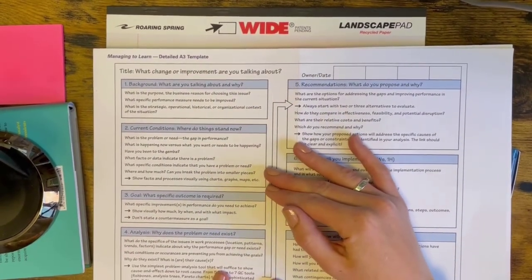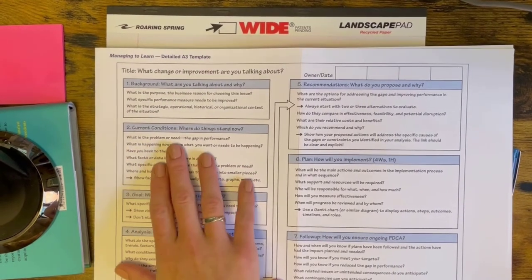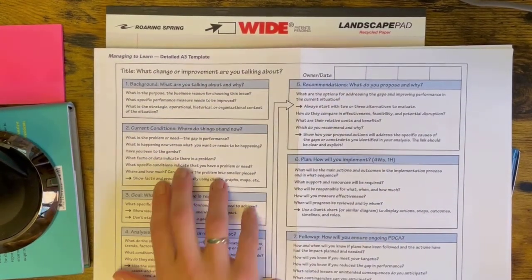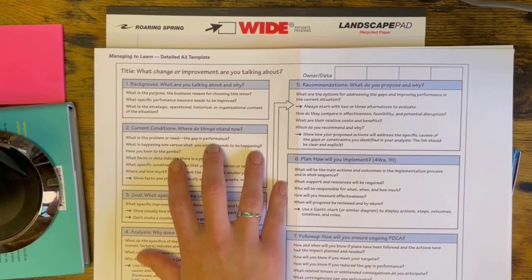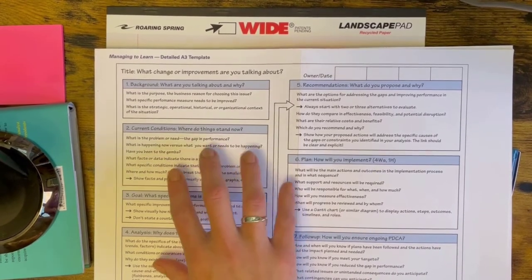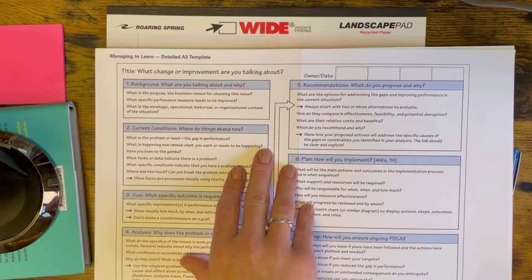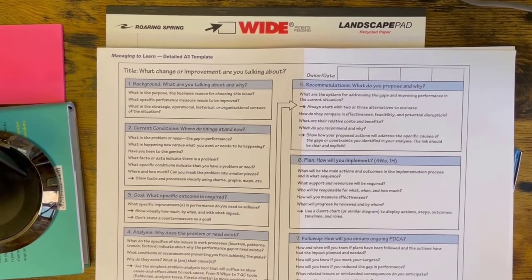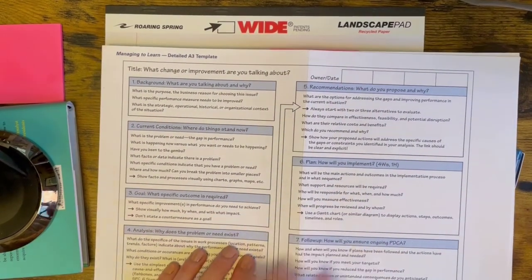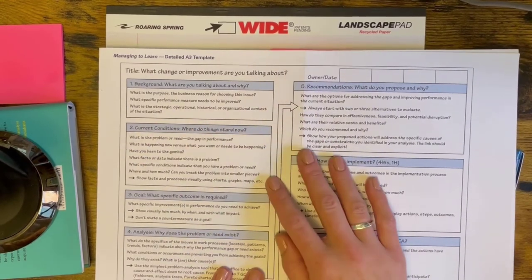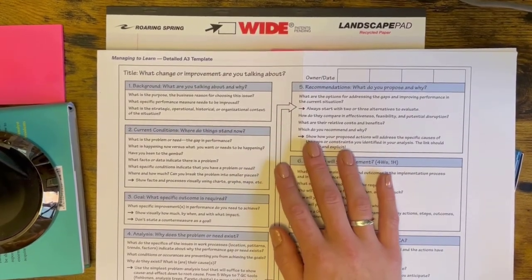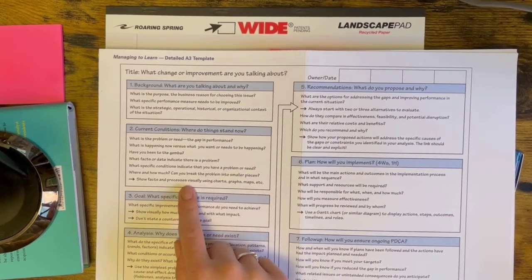The current condition section is where you describe where you are today — what's the problem, need, or gap in performance. Get very specific: how many minutes do you need to improve turnaround time? Look at your data — what's happening now versus what you want to have happen. Have you been to Gemba? Any facts, details, specific conditions like turnaround time or decreased patient satisfaction are your key performance indicators. This is a great place to show facts using charts or graphs.